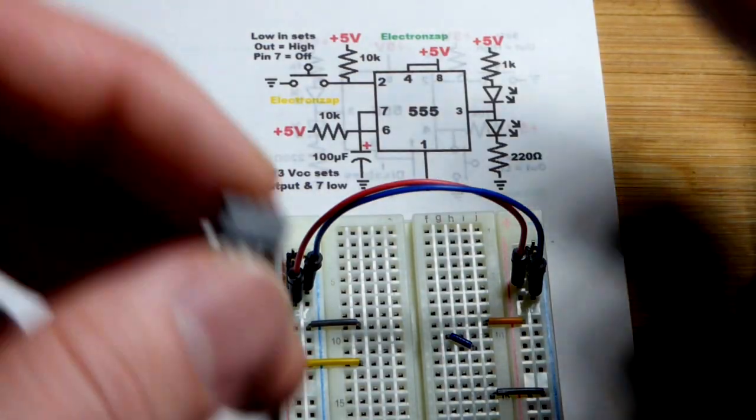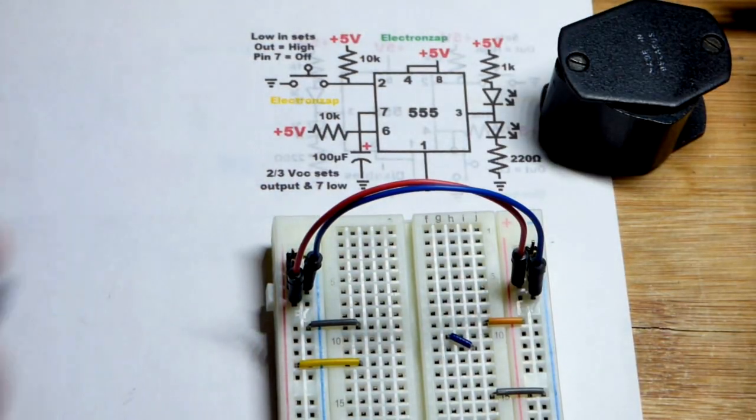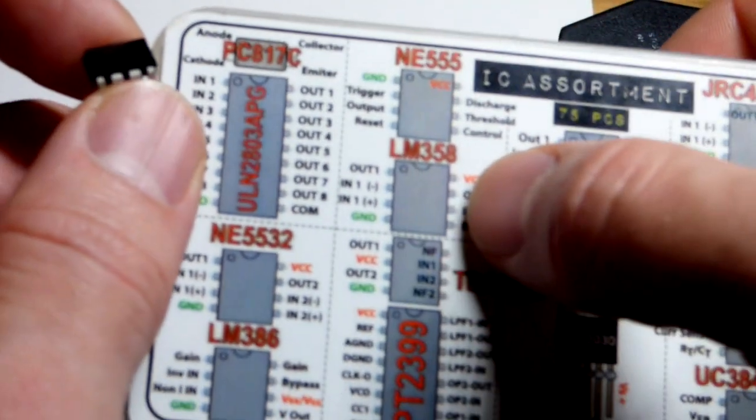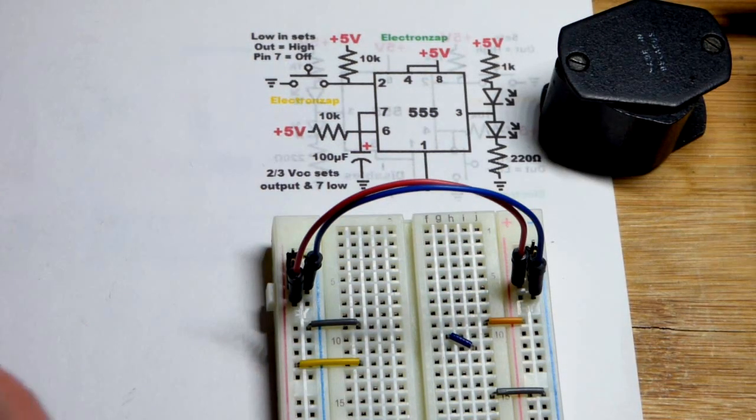So there you can see the NE555 right there, look for the part number. I got this 555 from this kit right there. It shares a spot with the LM358, which I also use quite a bit, and there's other integrated circuits I made videos of some of them.